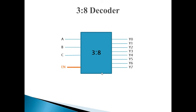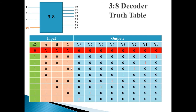Now we will see the next example, that is the 3-to-8 decoder. As the name specifies, it has 3 inputs and 8 outputs — N and 2 raised to N, so 3 and 2 raised to 3 is 8. Along with this, it also has 1 enable pin. Similar to the 2-to-4 decoder, if enable is 0, then whatever may be the inputs A, B, C, all outputs will show 0. For the rest of the cases, enable pin is 1, so to function the decoder, you should enable it by sending signal 1 to enable.